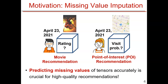A well-known application is the recommender system. For movie recommendation, if we can accurately predict the rating of a user for a movie at a given time, and if the rating is high, we can recommend that movie to the user. Similarly, for POI recommendation, if the visiting probability of a place at a given time for a user is high, we can recommend those places.